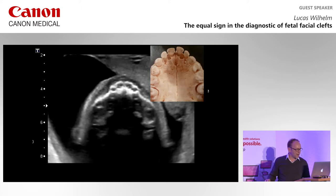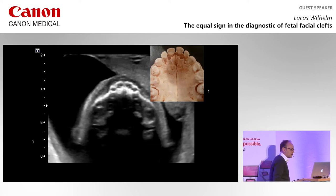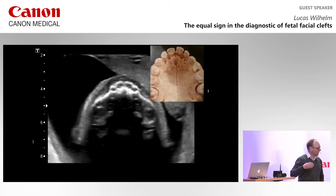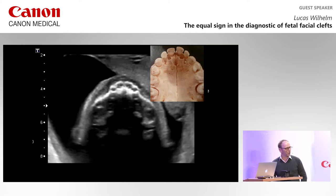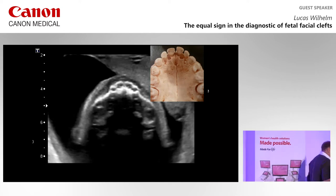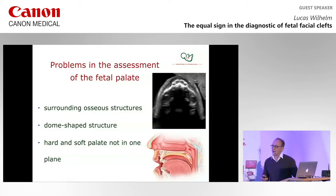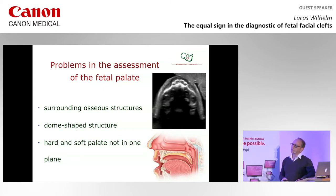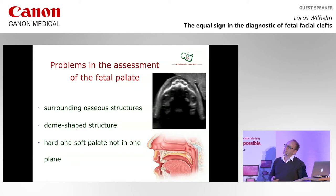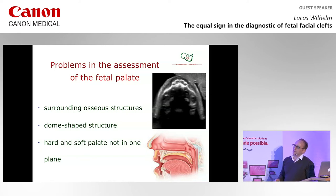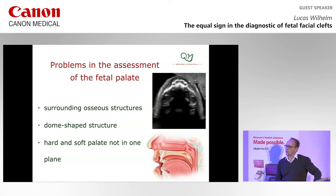The clefts in the alveolar ridge you have to find between the second incisor and the canine teeth. When you find a cleft here, the problem starts — and the problem is this black hole. The most common problems with assessment of the palate are the surrounding bony structures causing shadowing artifacts and preventing assessment of the palate. Two other issues are the dome-shaped structure of the palate and the fact that the hard and soft palate are not in one plane.